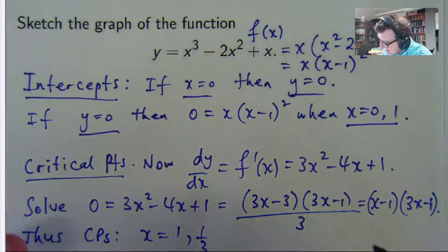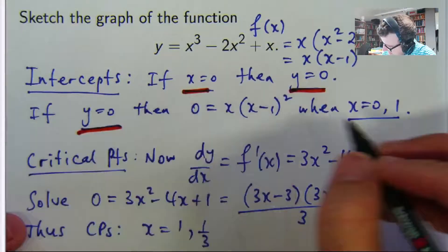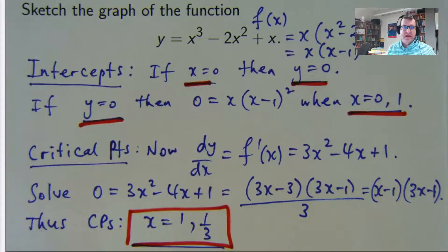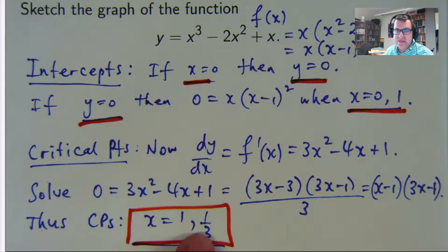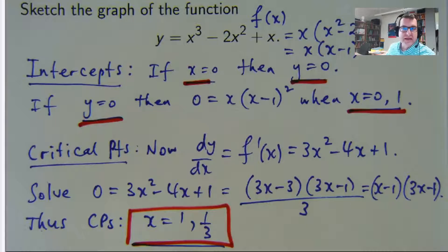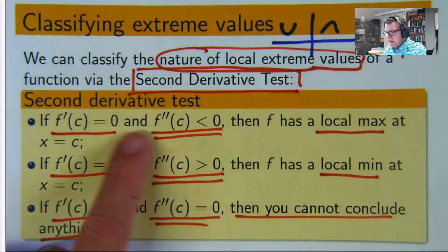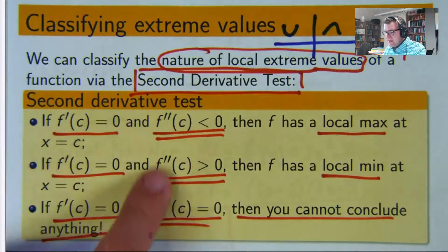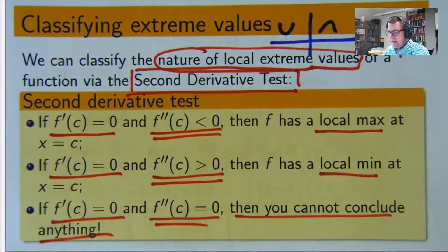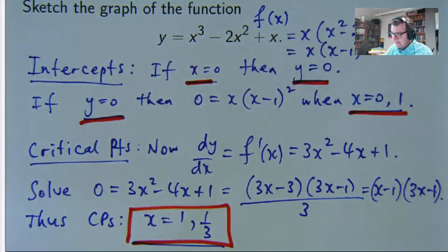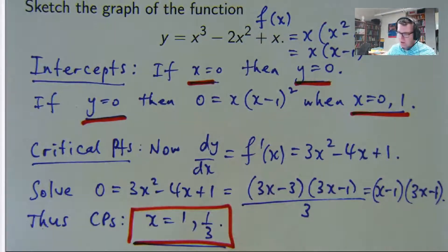We have our intercepts and our critical points. The next thing we're going to do is classify these critical points — are they a local max, a local min, or perhaps something else? We can do that using our second derivative test, which says that at the critical points, depending on the sign of the second derivative, you have a local max or a local min. If the second derivative is 0, then you can't say anything. So let's compute our second derivative.